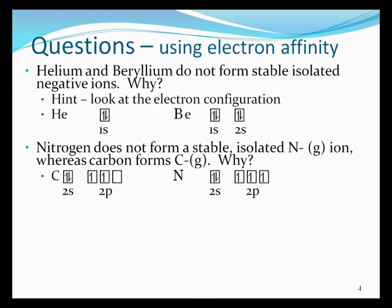However, in the case of nitrogen, we would be pairing, and the added repulsion for pairing the electron in that p orbital is greater than the force of attraction that would be experienced by the electron from the nuclear charge, and so indeed you cannot make an isolated N minus ion.